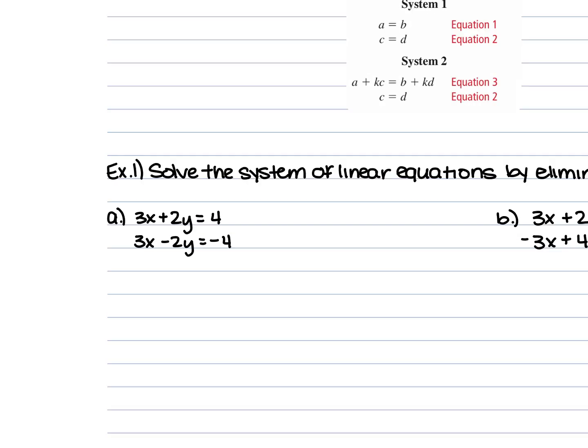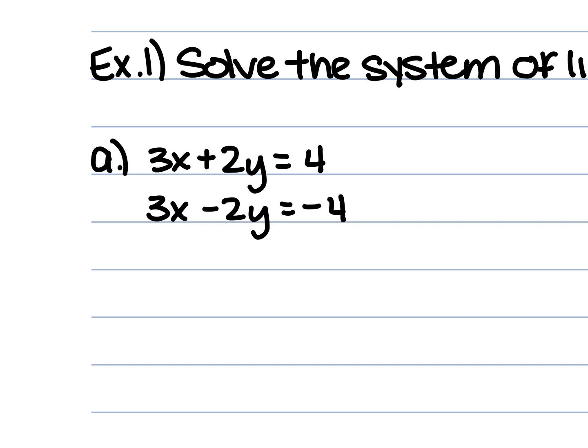Let's look at example 1a. Do either of these equations have the same variable but opposites? The y's — we have a positive 2y and a negative 2y. So it's set up perfectly for us. We're just going to combine the like terms and eliminate the y's. What's 3x plus 3x? 6x. 2y minus 2y cancels — it's just 0 — so it cancels out. That's why this is called elimination, because we're eliminating one of the variables.